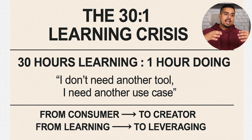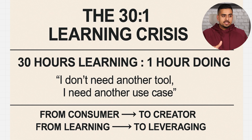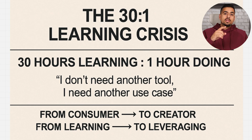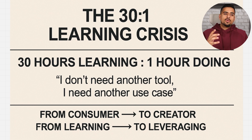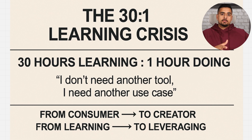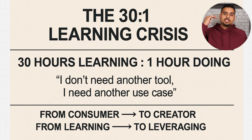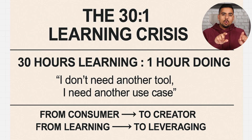I'd call it the 30-to-1 learning crisis, where you spend 30 hours learning but only one hour actually doing the thing. You end up with the equivalent of 50 half-built bridges of information and knowledge, where you don't even get the chance to reach mastery, let alone intermediate — you're always stuck in the beginner phase.